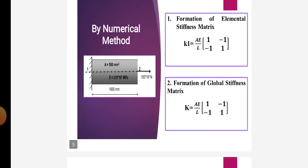There are seven steps. In the first step, formation of element stiffness matrix: K1 is equal to AE upon L, multiplied by the matrix [1, -1; -1, 1].